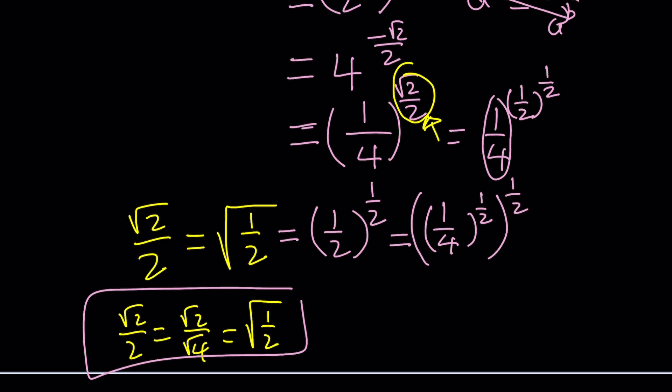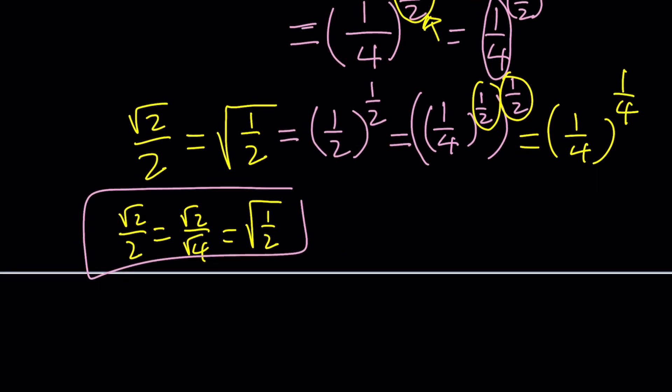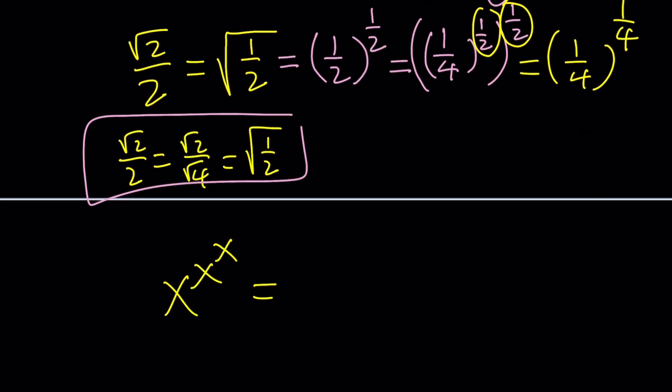Great. Now, we got the following. x to the power x to the power x equals 1 fourth to the power 1 fourth to the power 1 fourth. And from here, it follows that x equals 1 fourth is a solution.